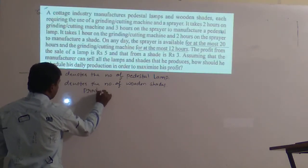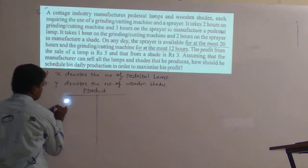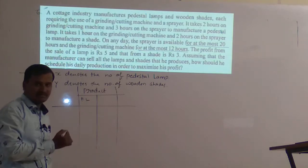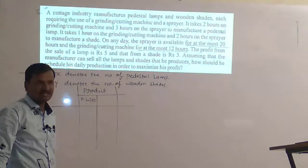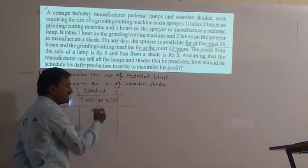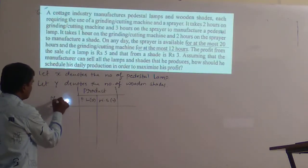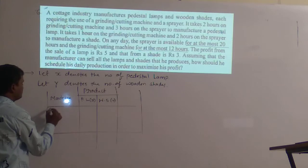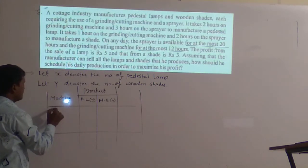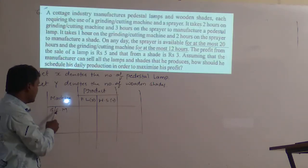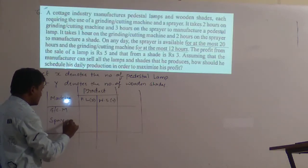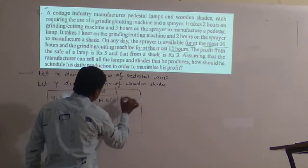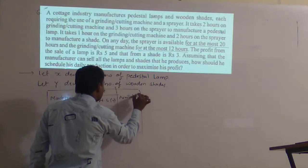We will make a table. The two products are pedestal lamp (PL), which I will take as x, and wooden shade, which I will take as y. They are using the grinding or cutting machine and the sprayer. I'll write the availability of the machines.